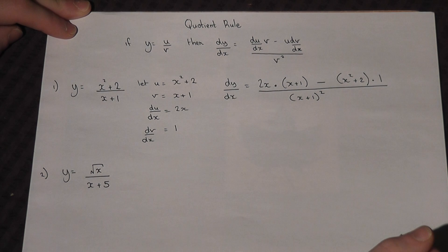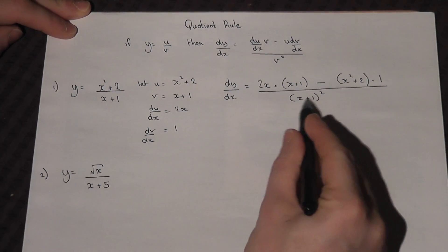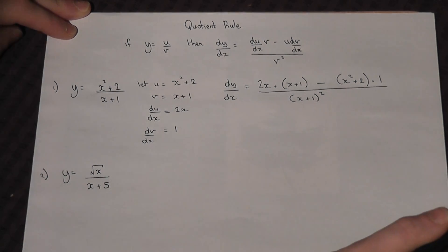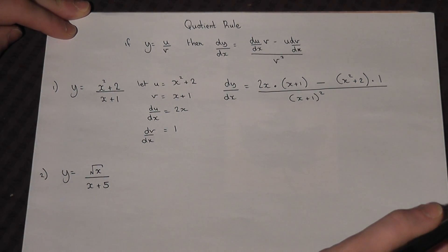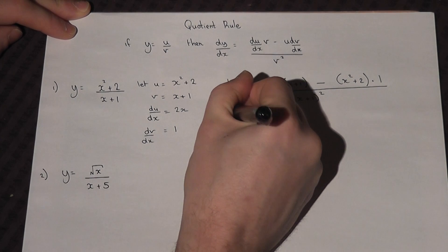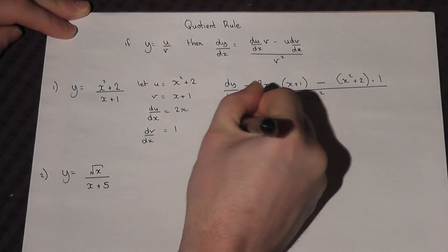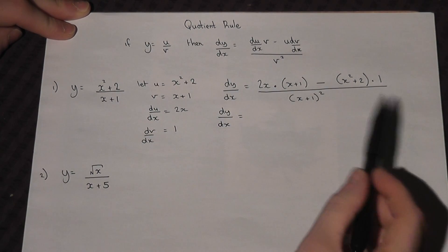The next step is to make this simpler, where possible. We always need the bottom factorized where possible. So dy by dx will equal, we can expand this, 2x times x is 2x squared.